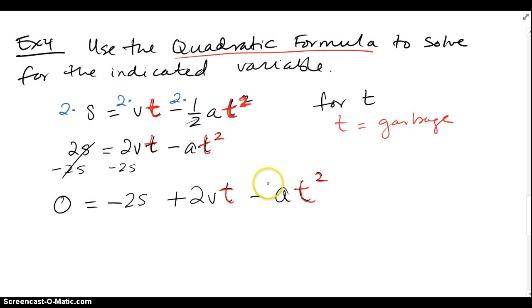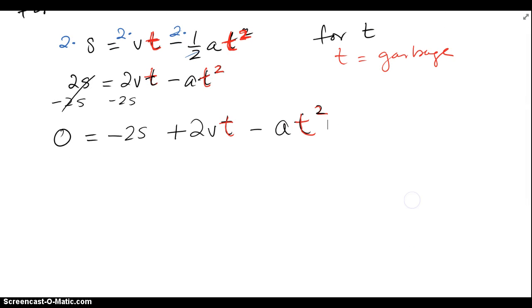So basically what I have is, this is like my a, this right here is like my b, and this right here is like my c, if I were thinking of the quadratic formula. But I kind of don't like, I personally don't like the negative leading coefficients.